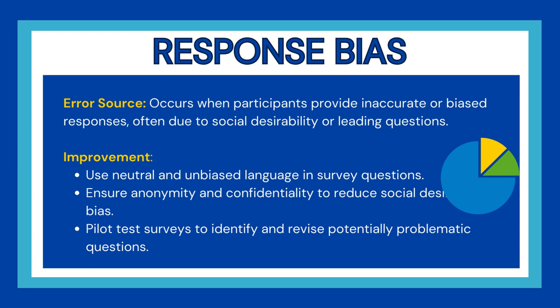Then comes response bias. The error source is when participants provide inaccurate or biased responses, which may be due to social desirability or leading questions that they don't want to answer honestly. Improvements suggested include using neutral and unbiased language in survey questions — questionnaire design is very important here — ensuring anonymity and confidentiality to reduce social desirability bias, and conducting pilot test surveys to identify and revise any potentially problematic questions.